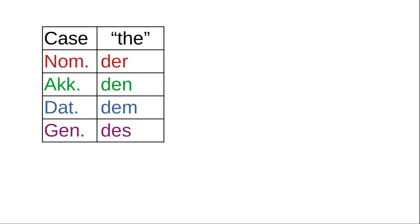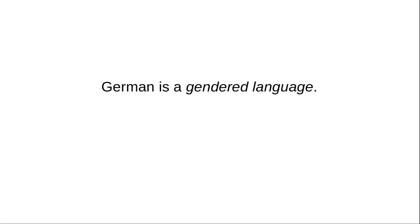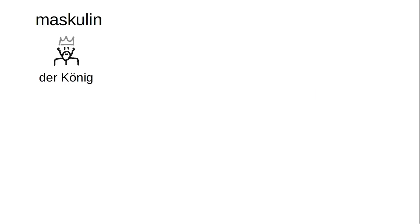In dative, the indirect object, it's 'dem', and in possessive genitive it's 'des'. There's more to the story though, because German is a gendered language — the definite article changes depending on the gender of the noun.